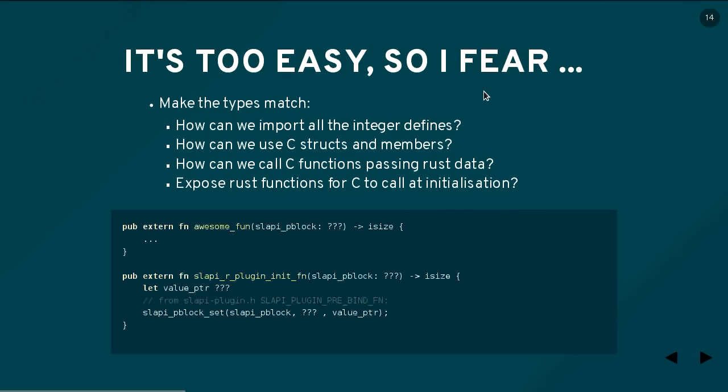This is where it gets hard. We knocked up a little bit of code for the purposes of this demonstration. Here is some Rust code — you'll notice it has a lot of question marks. These are the unknowns. This code is meant to show how registration of that plugin works, and we need to fill in all these types. Somehow we need to get a parameter block in, register our function as a pointer, and get the code actually called. So how do we bring in all our integer definitions? How do we get all our structs and members? How do we even call the C functions we need?